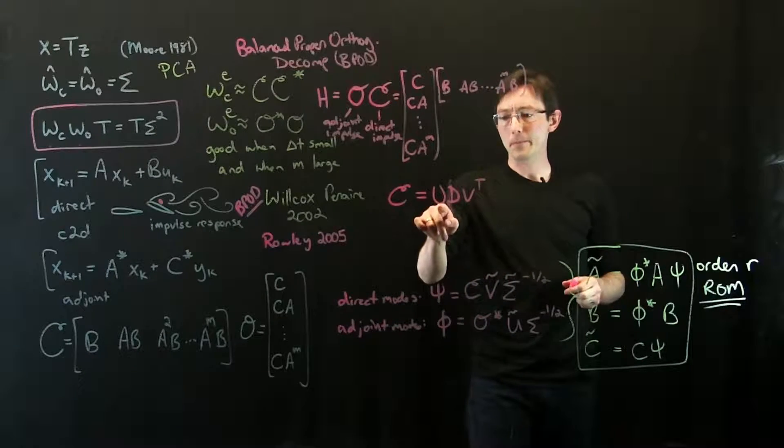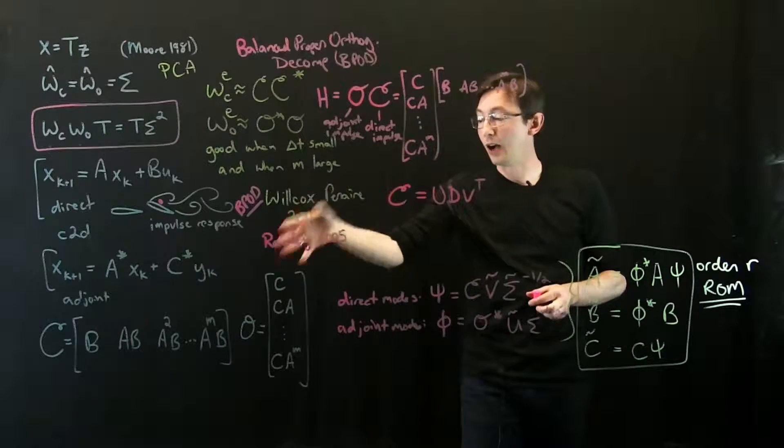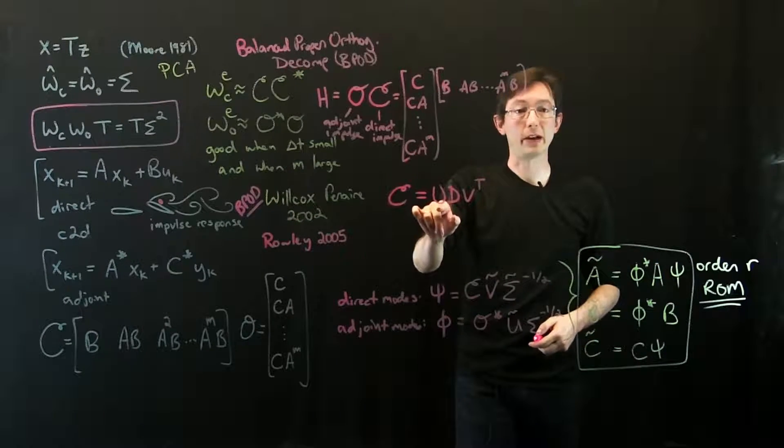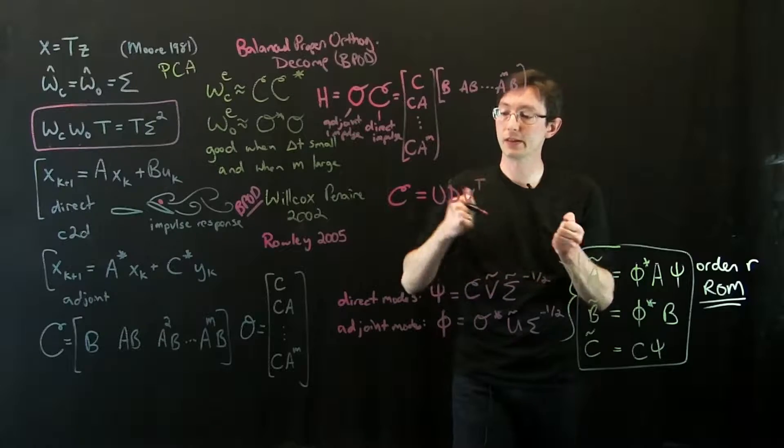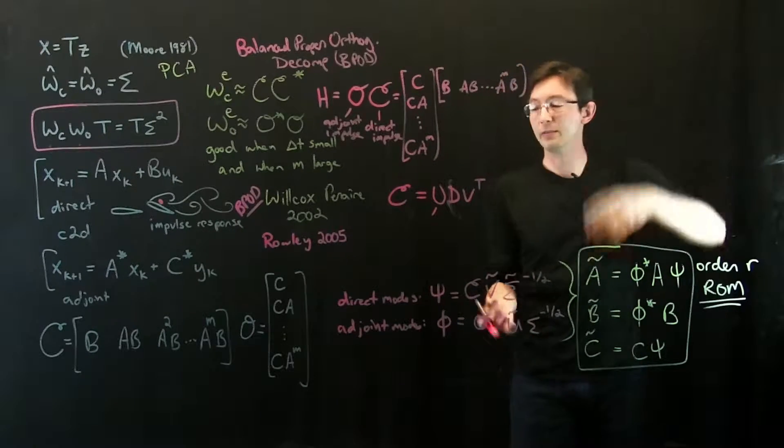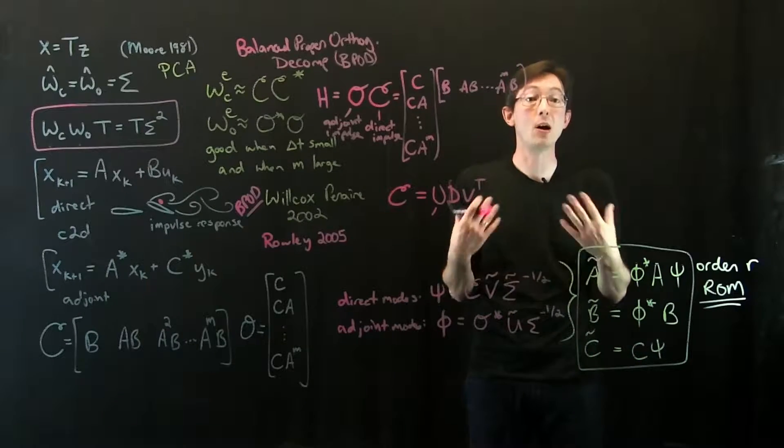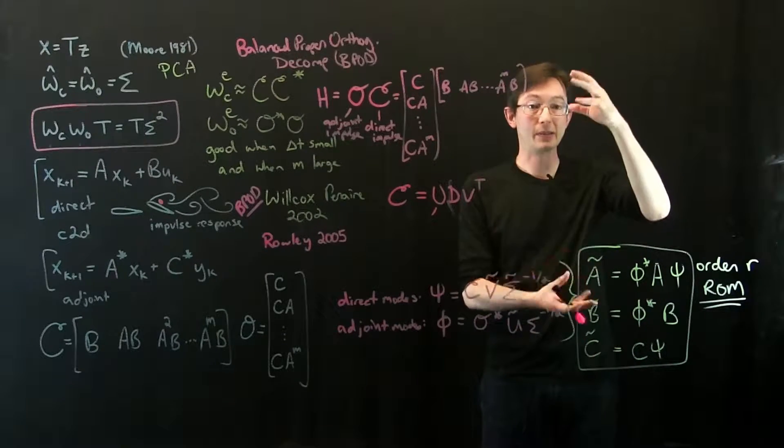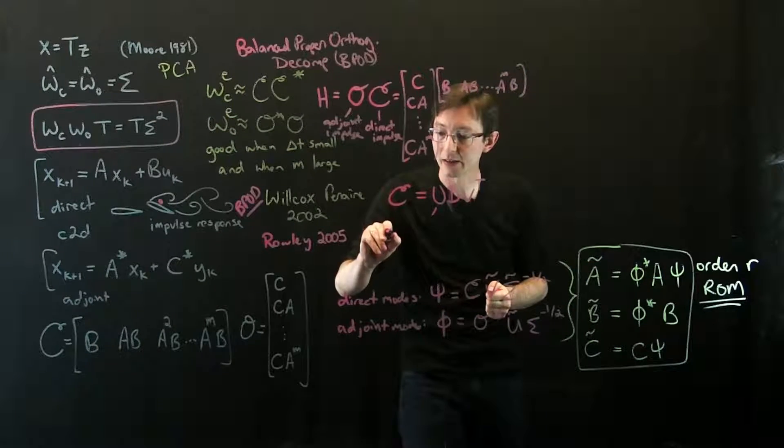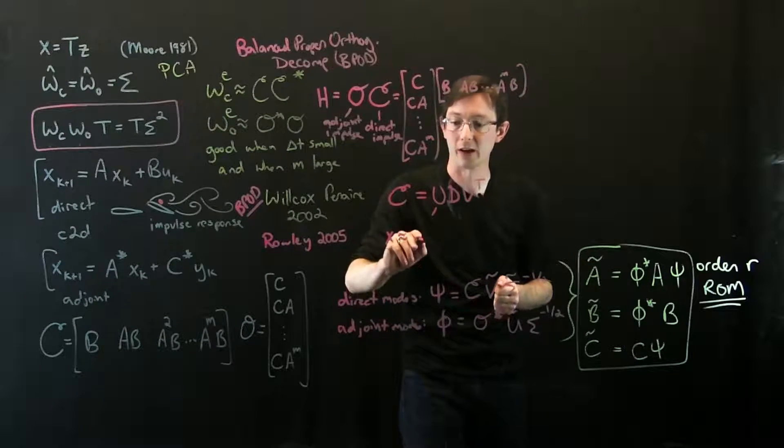What we find is that the dominant patterns that are excited by impulse responses in the input are given by the first columns of U. So I can basically describe my million dimensional system in terms of a small handful of modes or shapes that I can add up in a linear combination to reconstruct X.